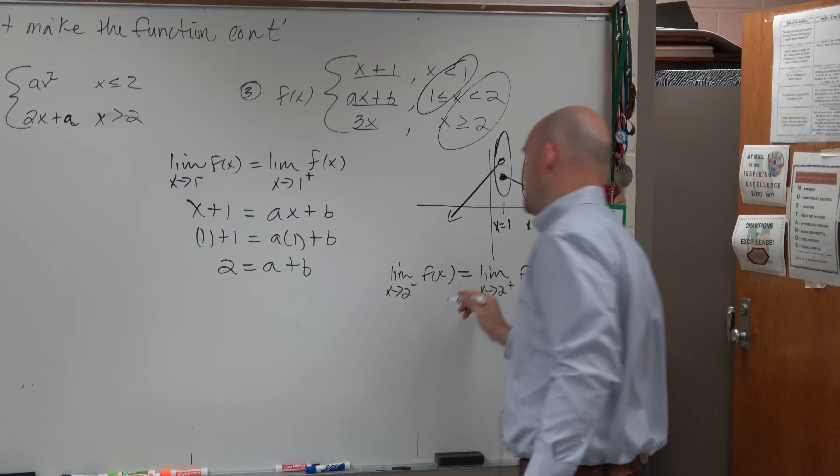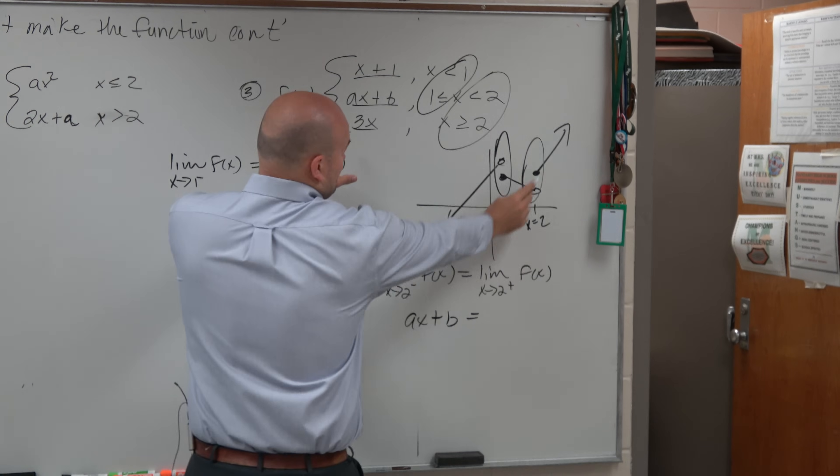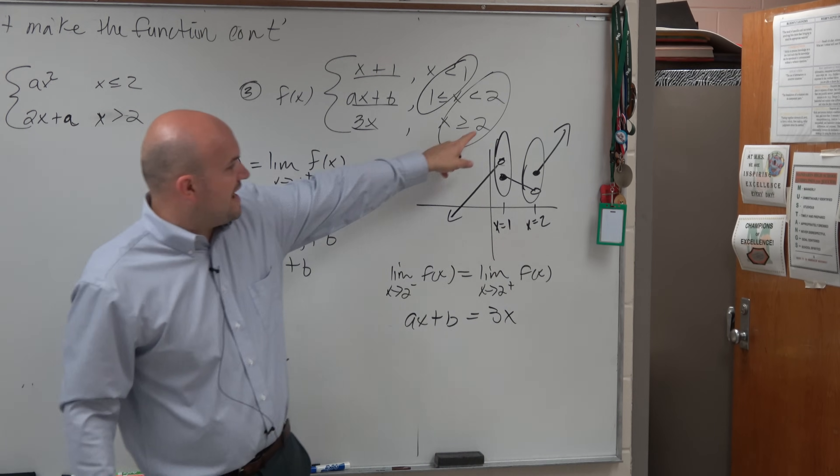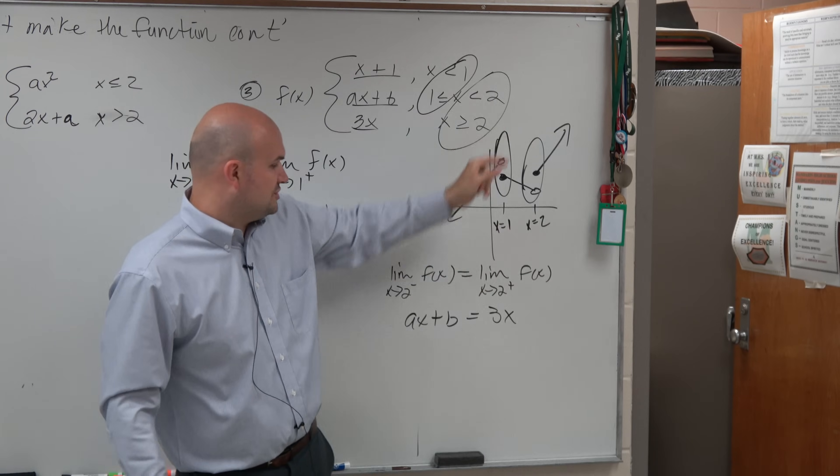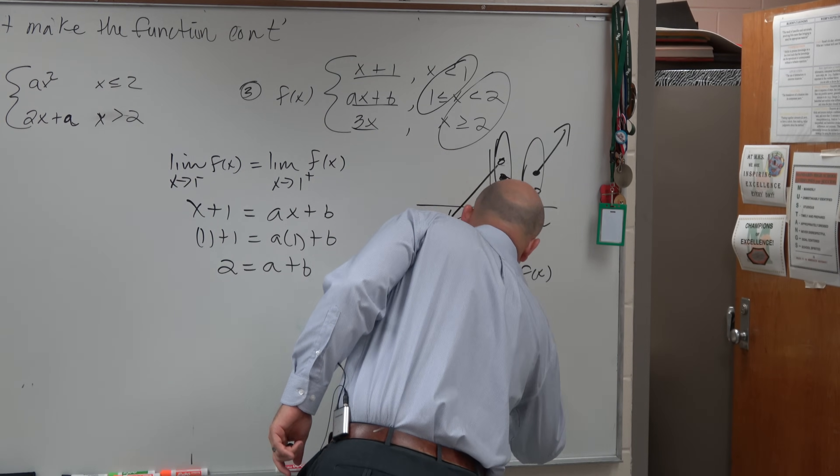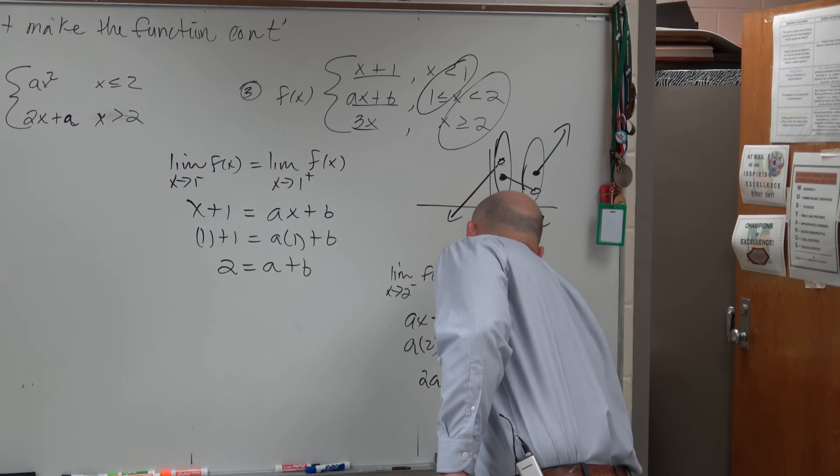So the left-hand limit is ax plus b, and the right-hand limit is going to be what represents 3x. Then I plug in my new value that I'm trying to make them connect at, which is 2. So it's going to be a times 2 plus b equals 3 times 2, which is 2a plus b equals 6.